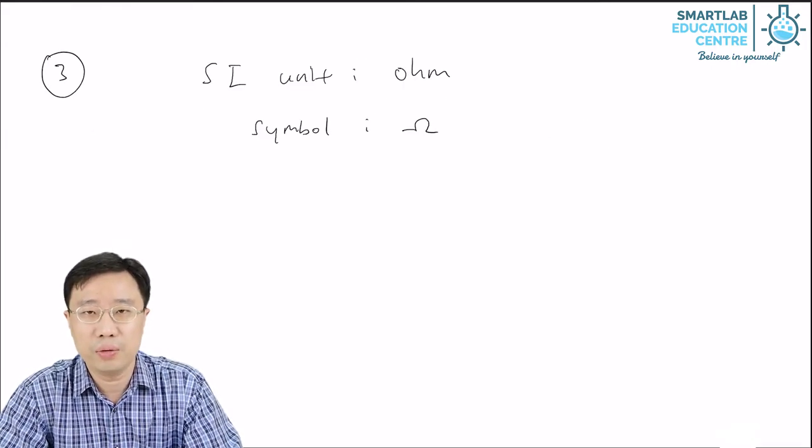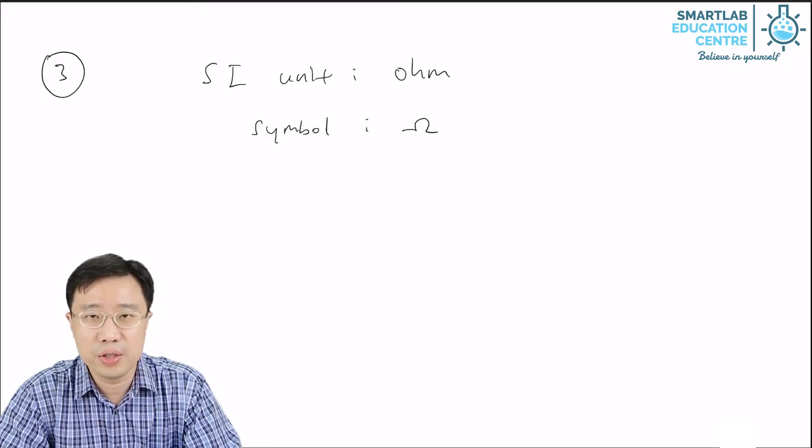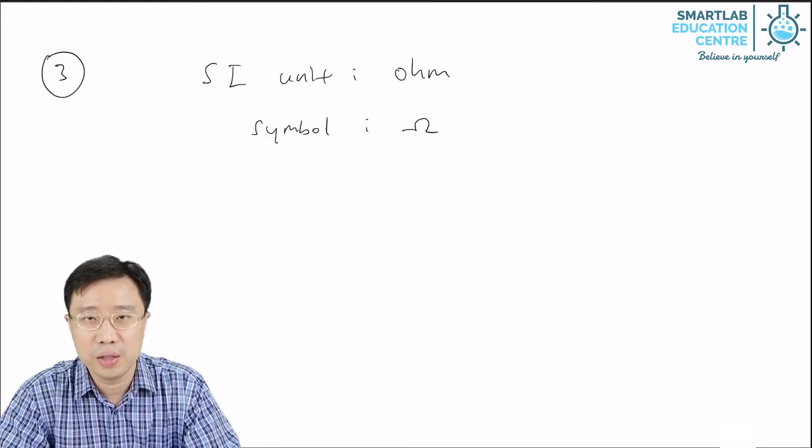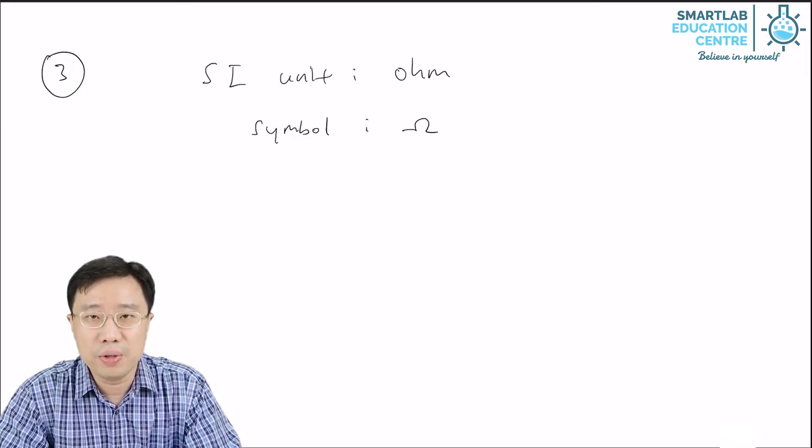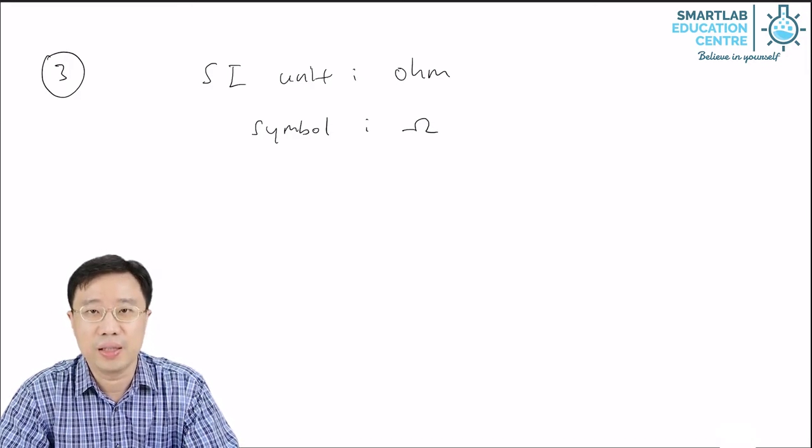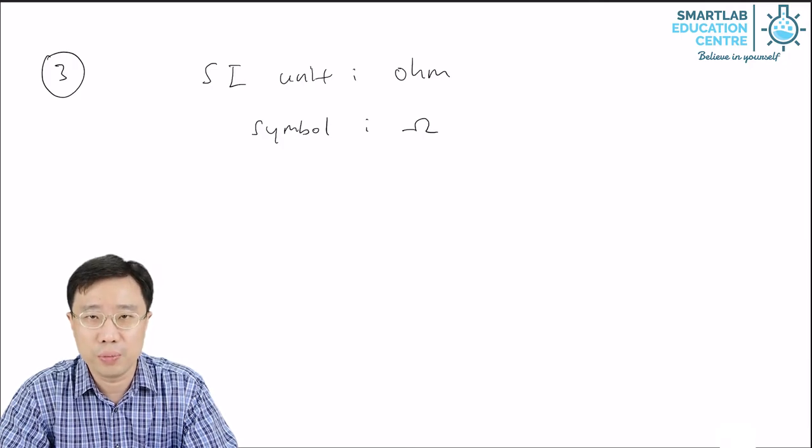Just like electric current and voltage, resistance also has a unit. The unit is the ohm. The symbol is a Greek letter, small omega.